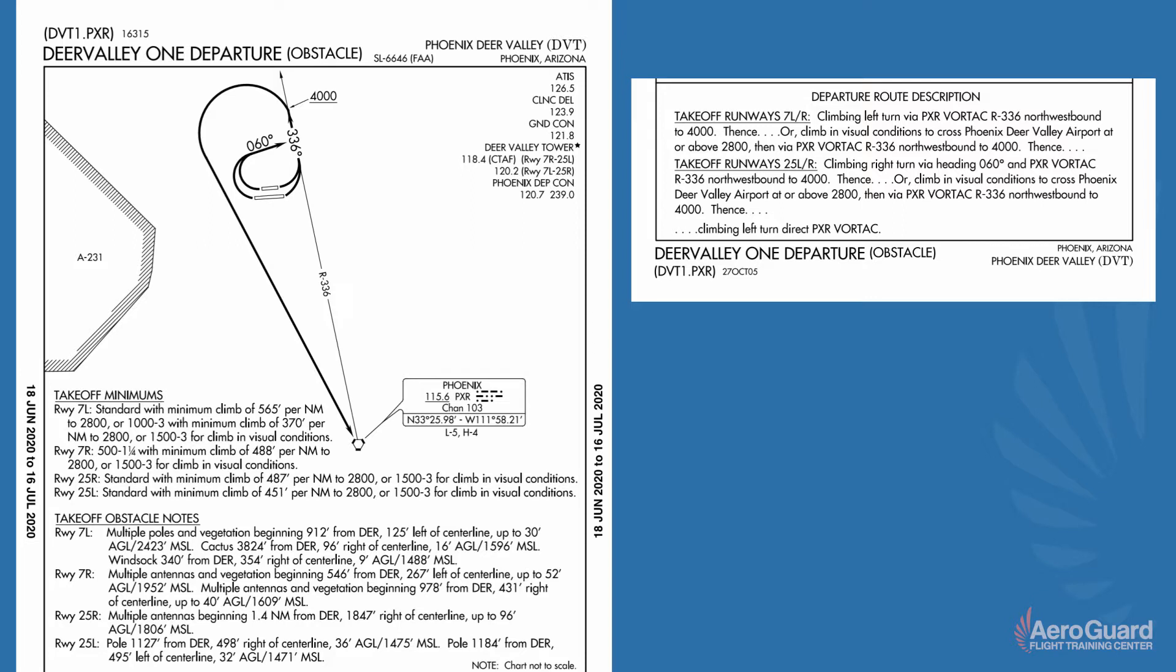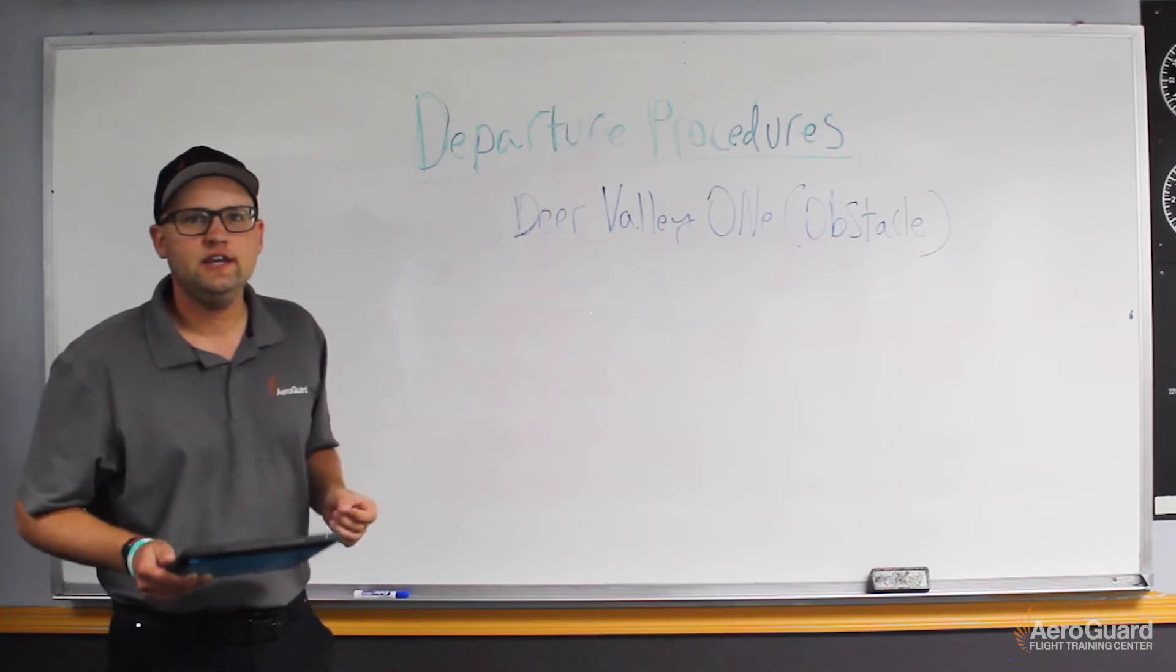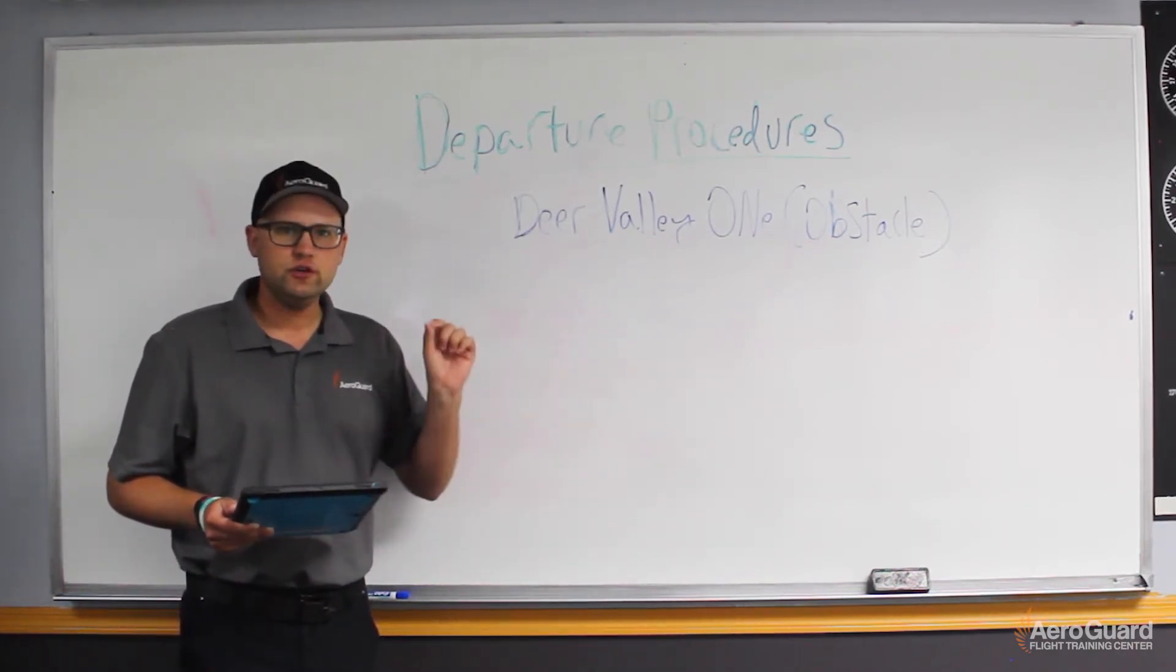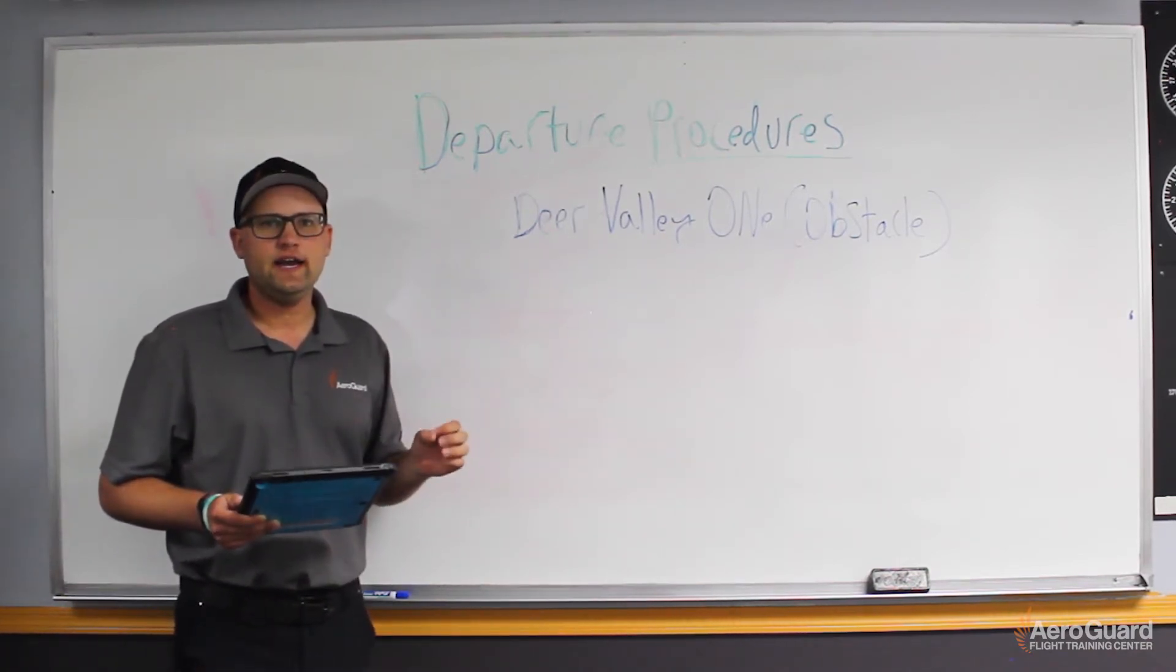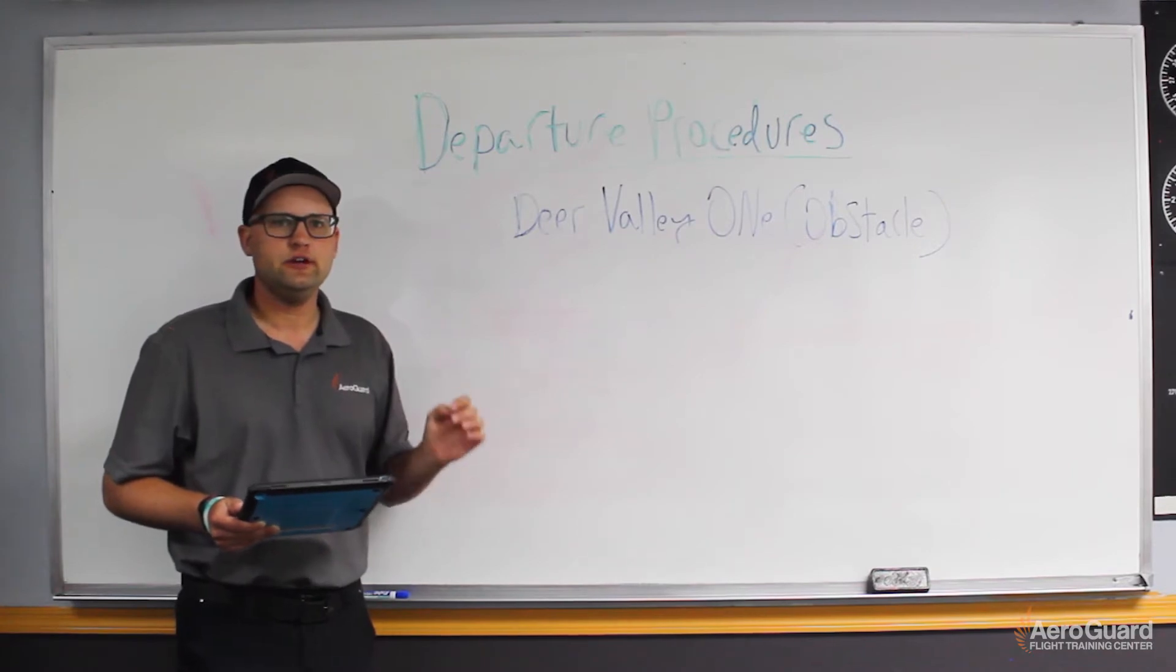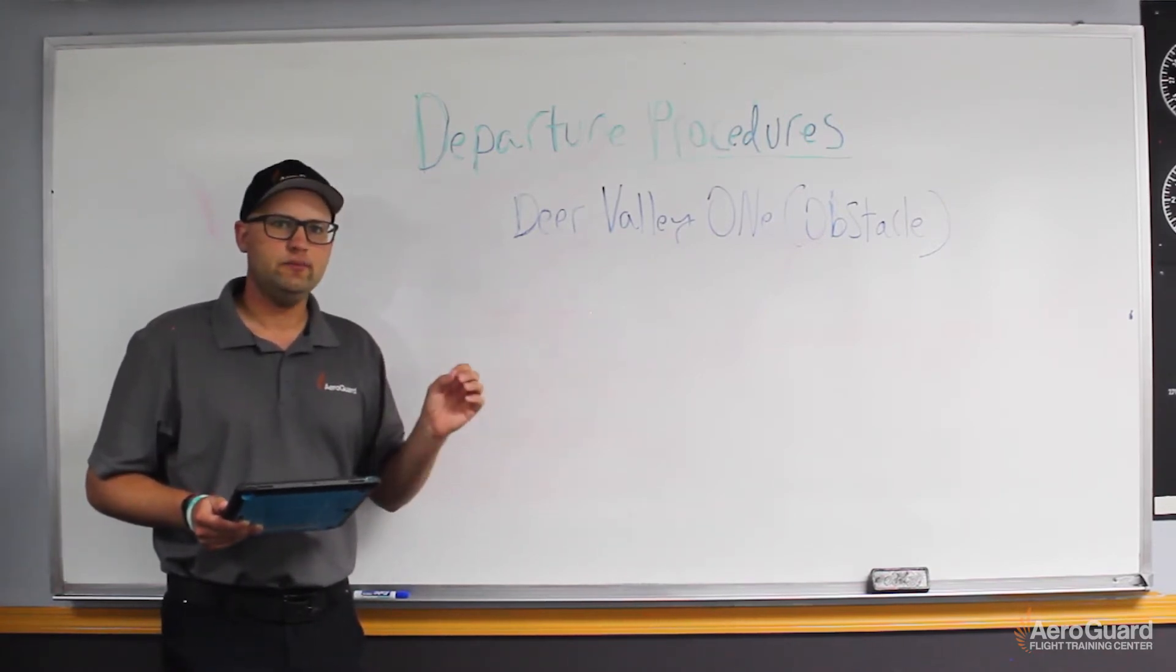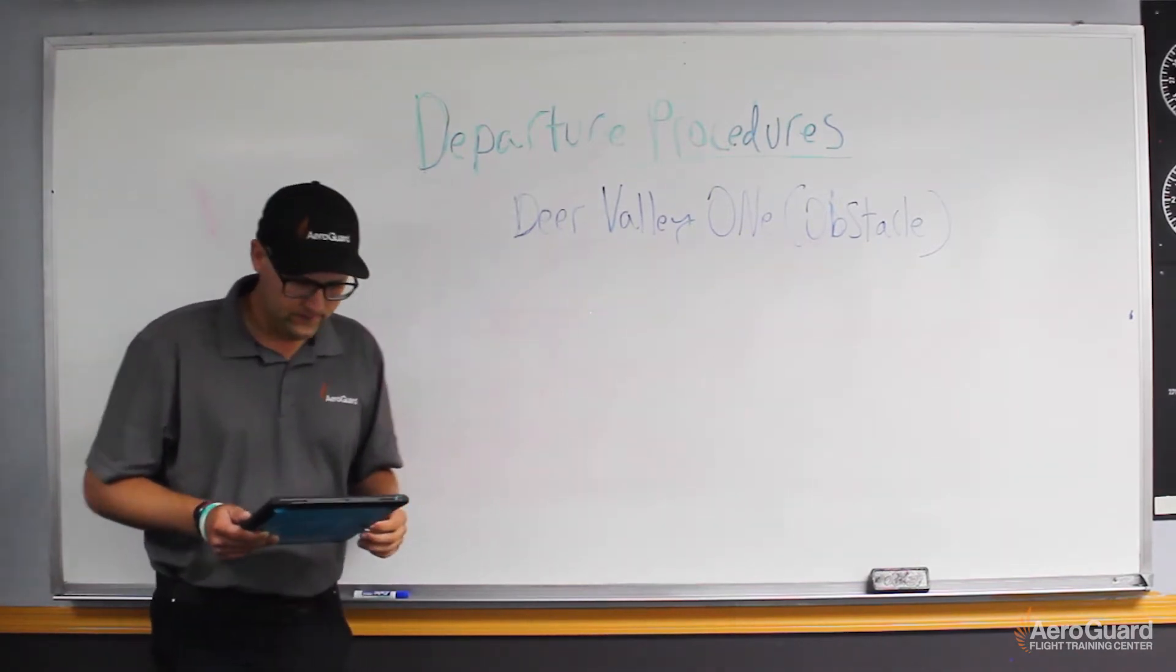So again, we talked about Deer Valley One obstacle departure gets us from the airport to the en route phase of our flight safely. There's a couple of things that we need to be aware of. First one is if you do not get your obstacle departure clearance in your IFR clearance, you can fly this one. According to the AIM 5-2-9, you do not have to have an obstacle departure procedure assigned your clearance in order to fly it. If it's at the airport that you're departing from, you can fly it on your own without a clearance on an IFR flight plan.